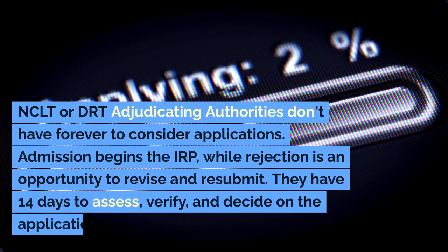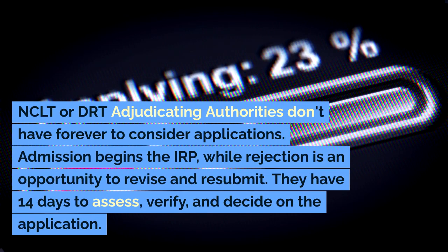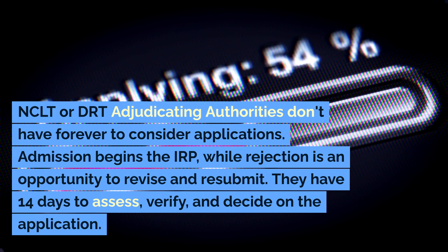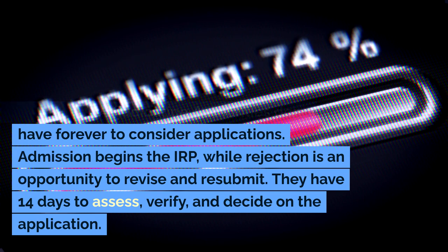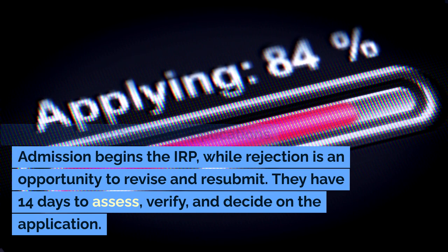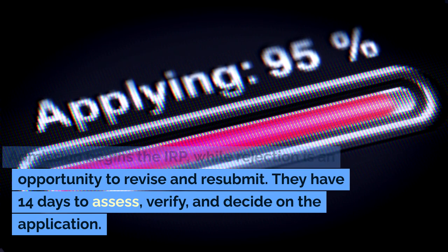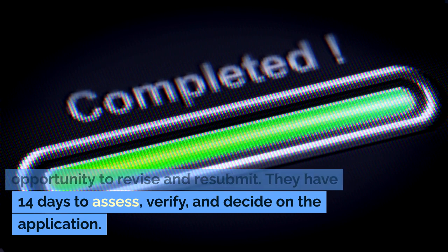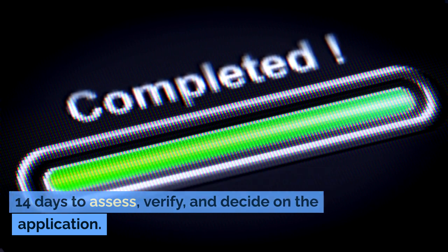NCLT or DRT adjudicating authorities don't have unlimited time to consider applications. Admission begins the insolvency resolution process, while rejection is an opportunity to revise and resubmit. They have 14 days to assess, verify, and decide on the application.